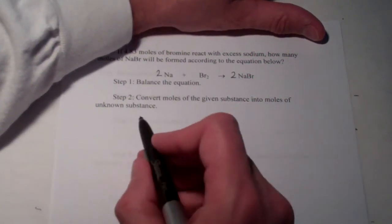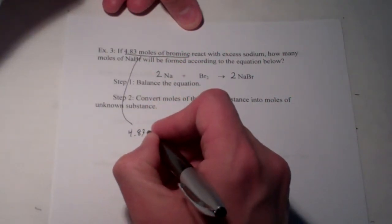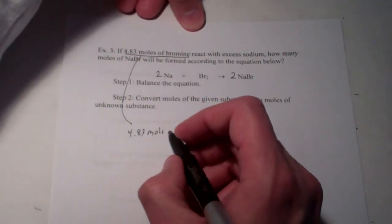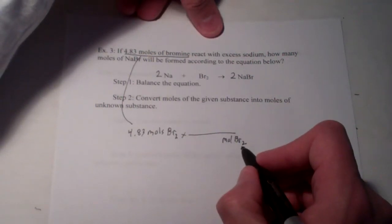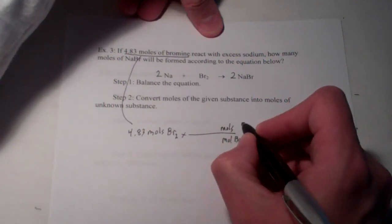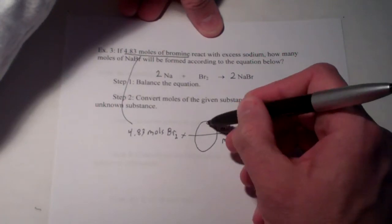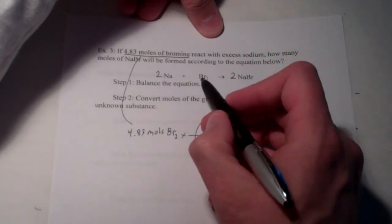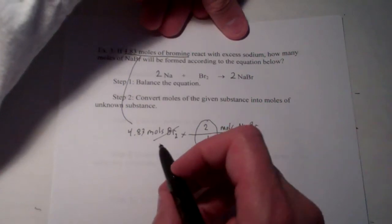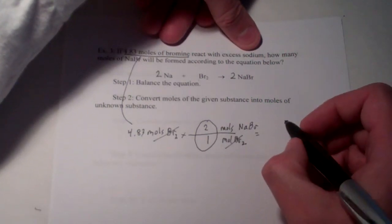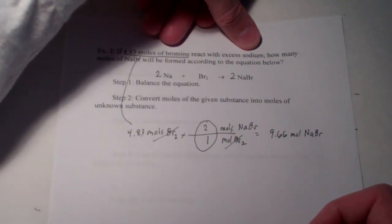We're going to convert moles of the given substance into moles of our unknown substance. We are given 4.83 moles of bromine. So, 4.83 moles of bromine, Br2. We want to get out of moles of bromine, putting the unit we want to get out of on the bottom, so they divide out, and we want to get into moles of what we're after. In this case, the question is how many moles of NaBr will be formed? This ratio comes from the balanced equation. We have one mole of Br2 produces two moles of NaBr. Moles of Br2 divide out, so we end up with 4.83 times 2, which is 9.66 moles of NaBr. You guys can check my math if you want. I believe that is correct.